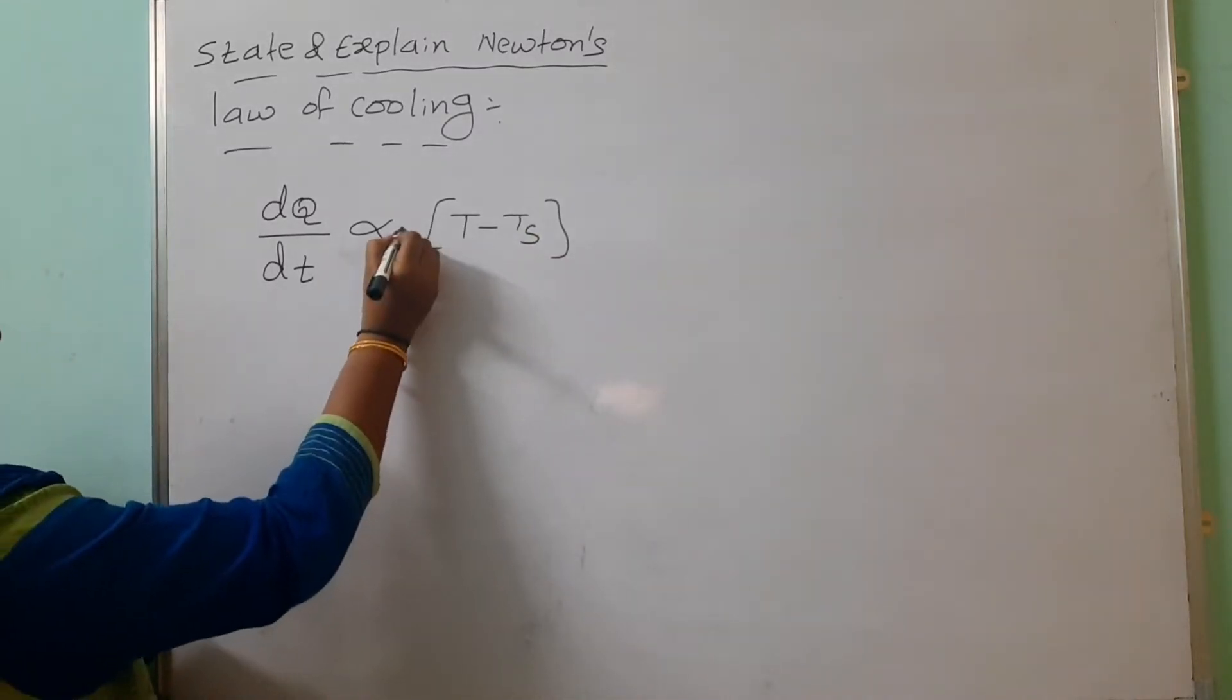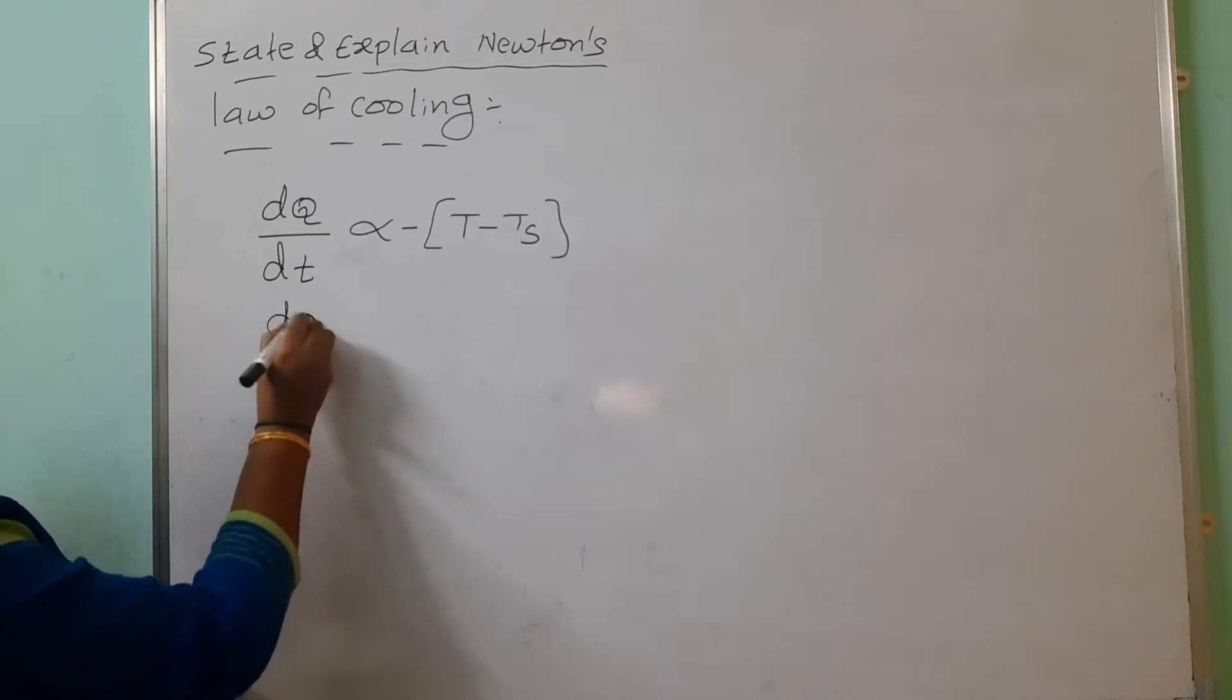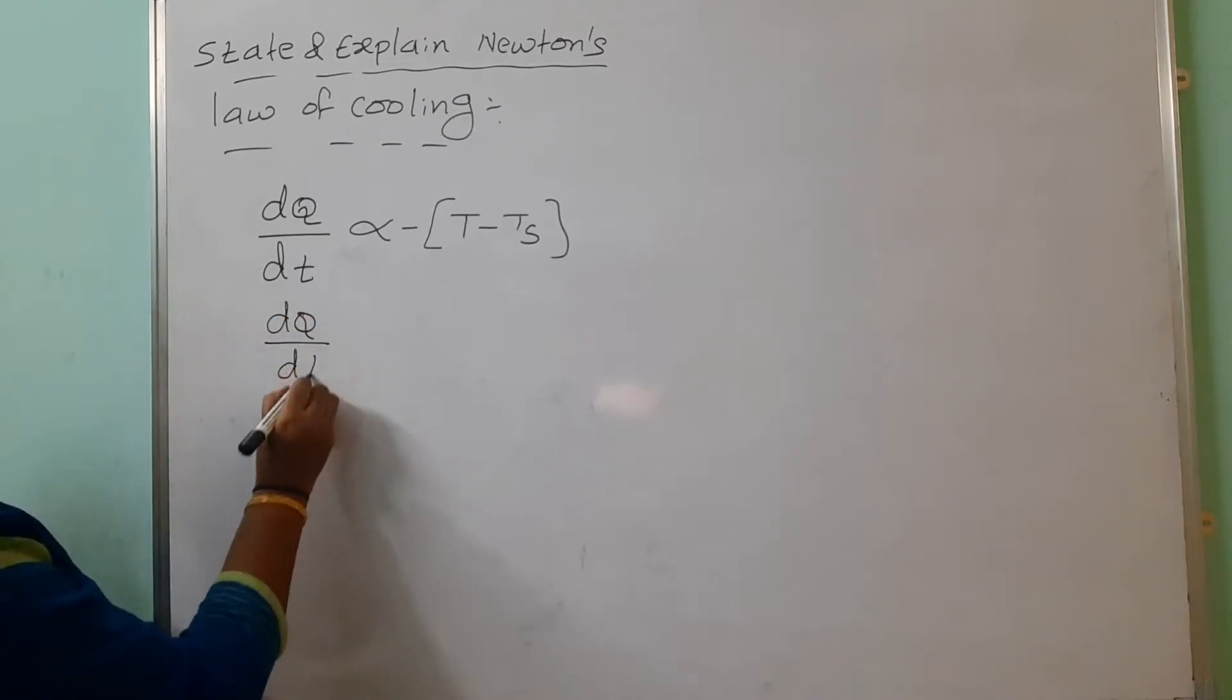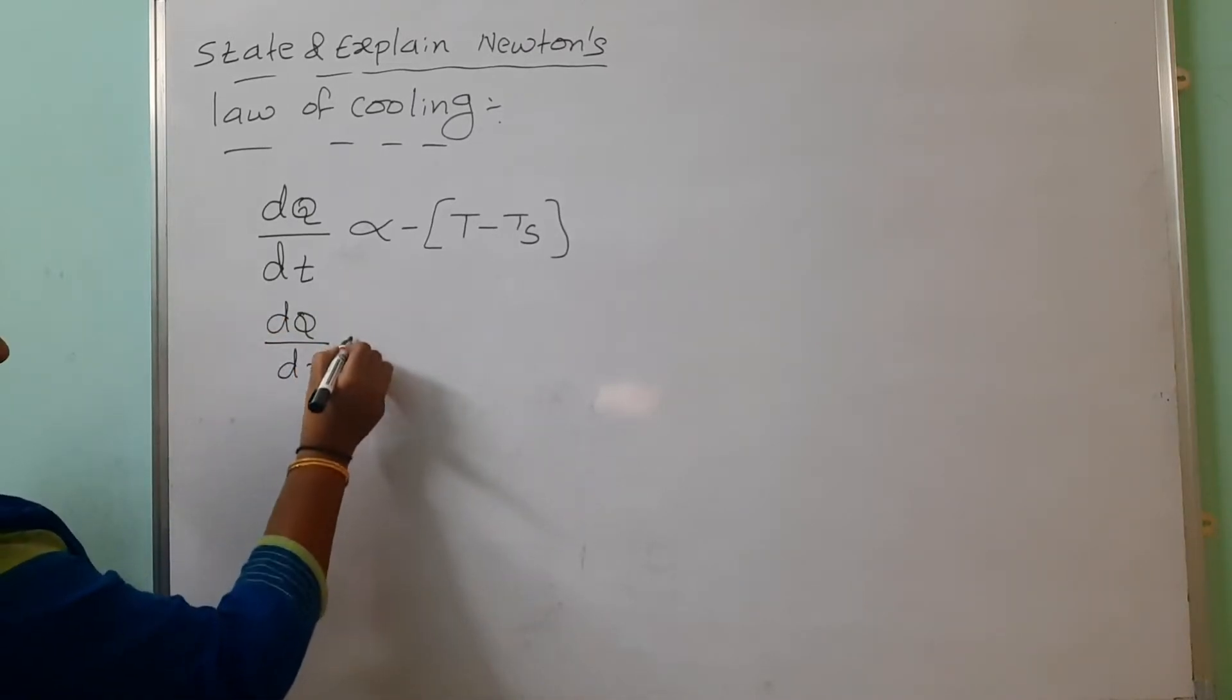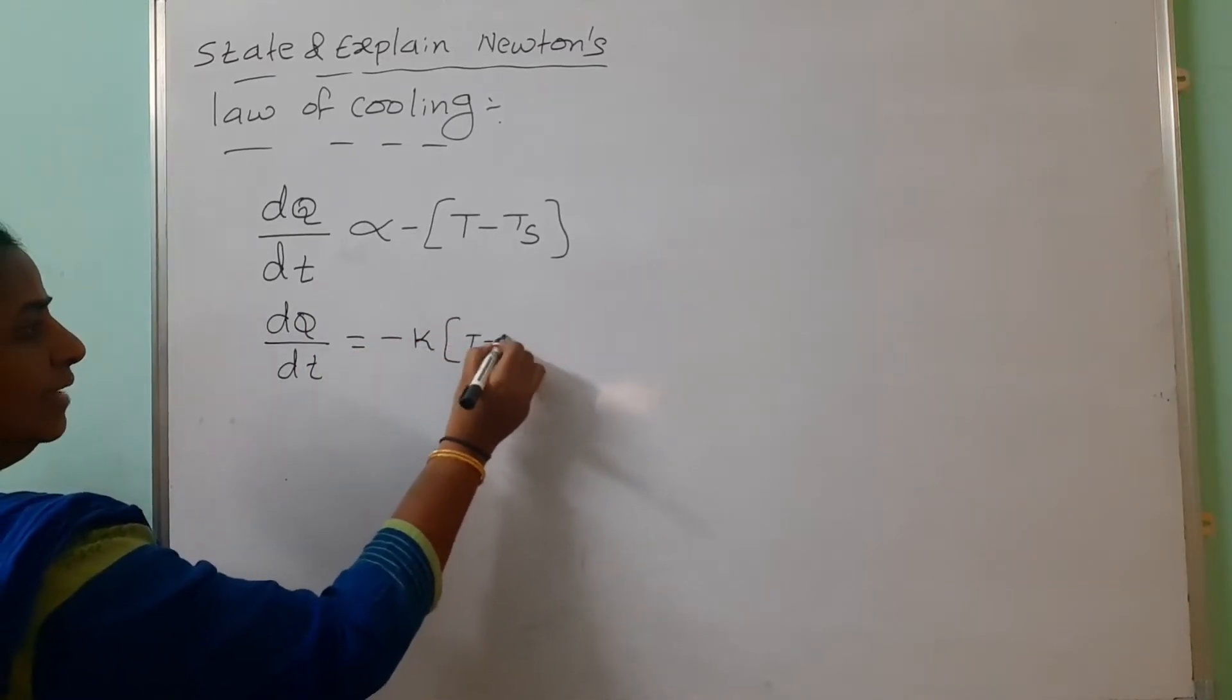It is losing, means here we are representing with negative sign. So DQ by DT is directly proportional to, when we are removing this we are getting one constant K into T minus TS.